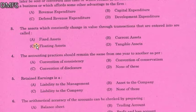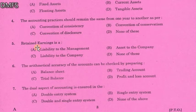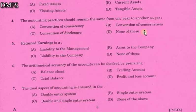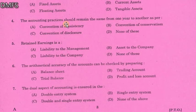The accounting practices should remain the same from one year to another. Option A is convention of consistency. Option B is convention of conservatism. Option C is convention of disclosure. The answer is option A, convention of consistency — all accounting practices should be the same.